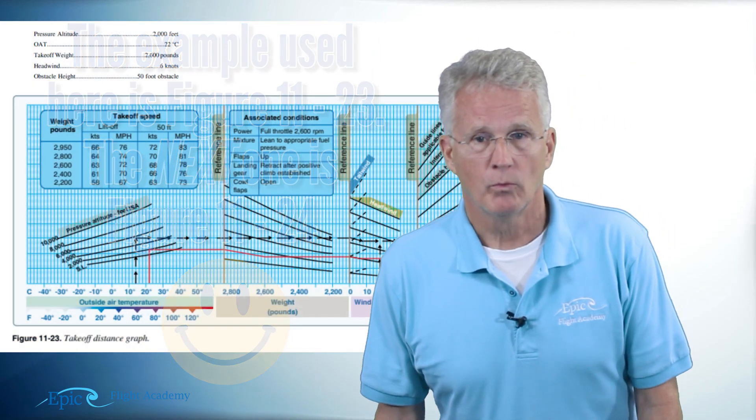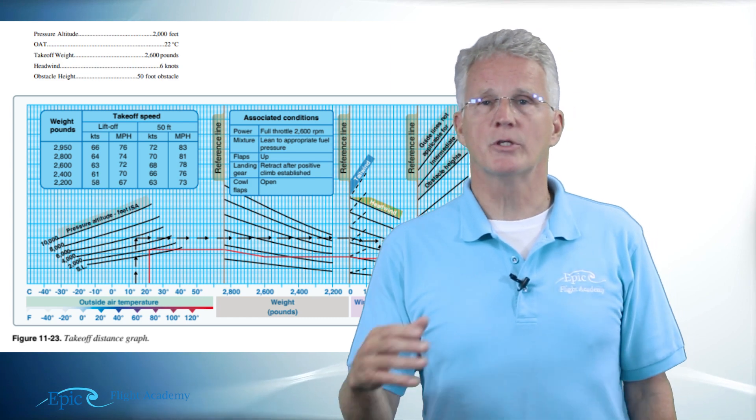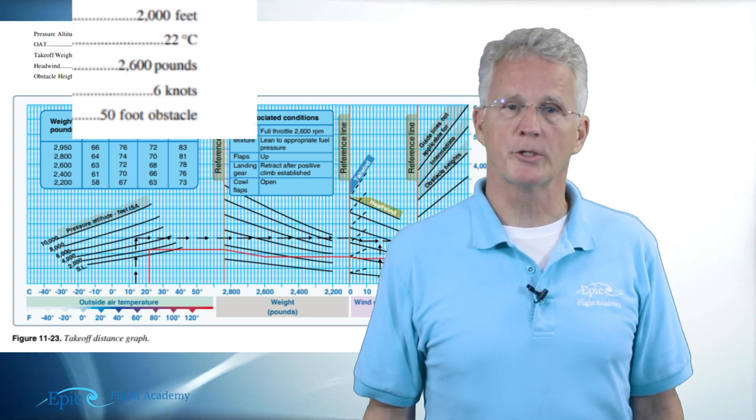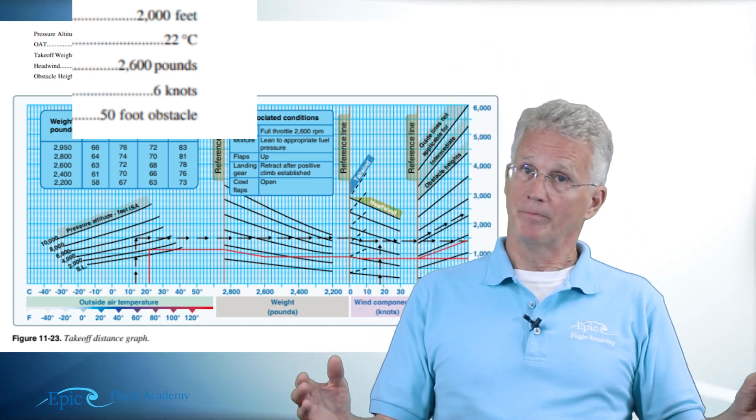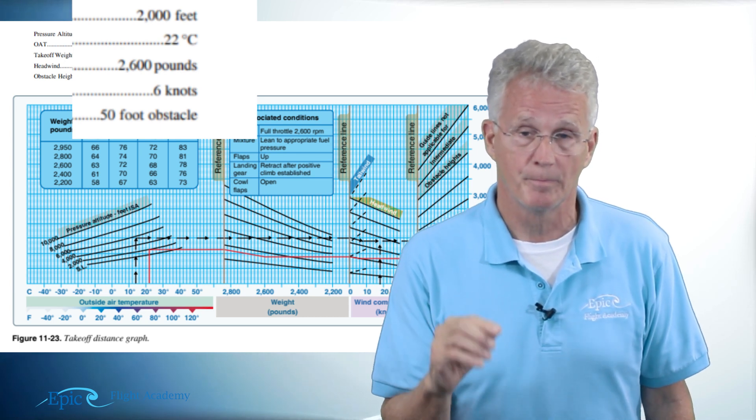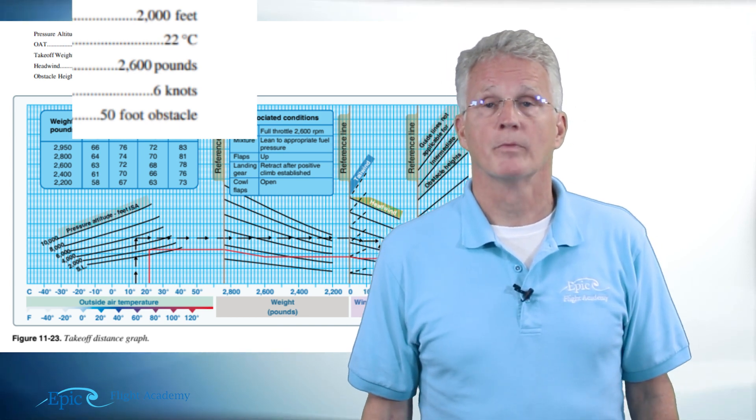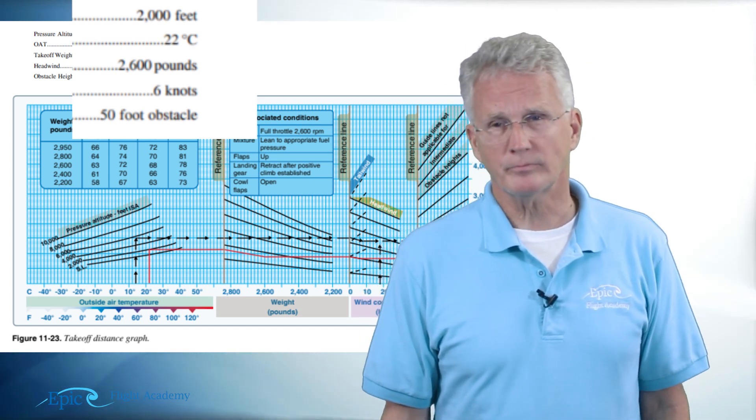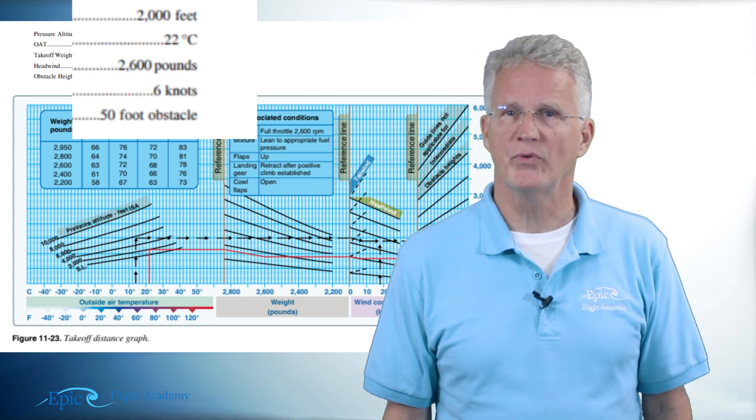Notice in our figure we have some given parameters for our example. Let's just pretend that we're operating our aircraft at a 2,000 foot pressure altitude where the OAT is 22 degrees Celsius. Remember the OAT? That's not the oats I ate for breakfast. That is the outside air temperature. My aircraft's weight is 2,600 pounds and I've got a headwind of six knots. I also have some trees as an obstacle on my departure that are 50 feet tall.